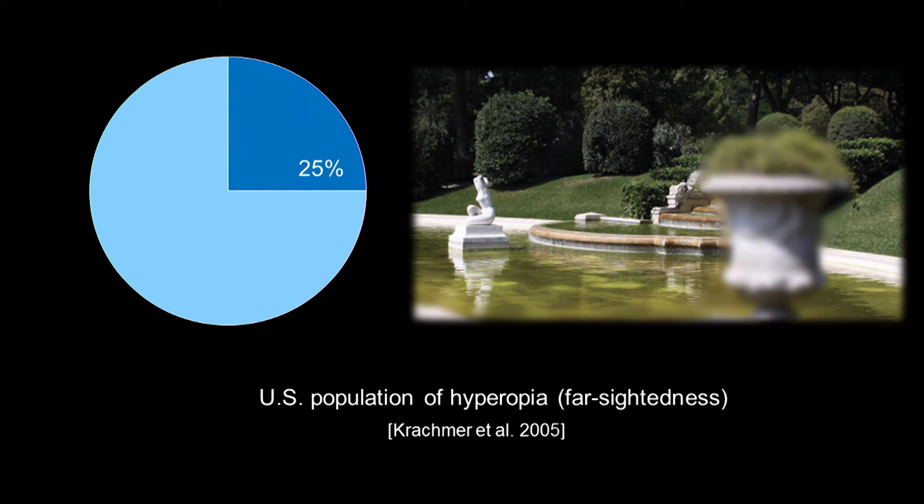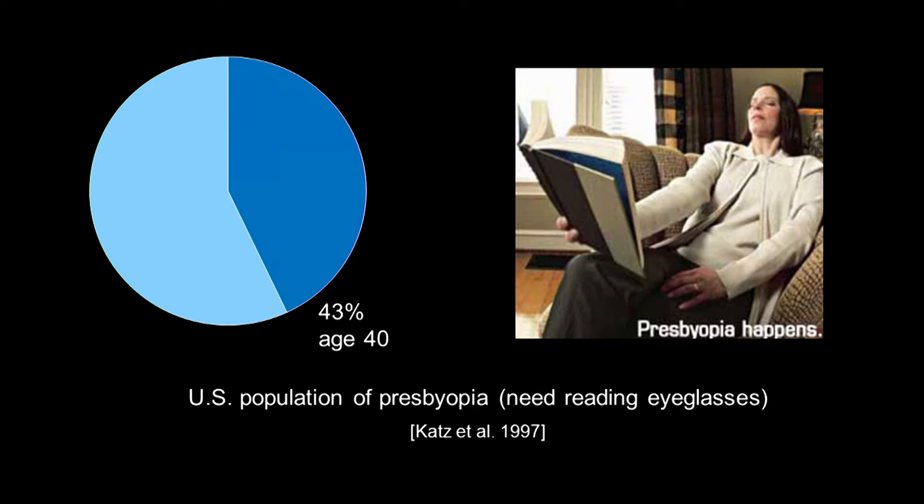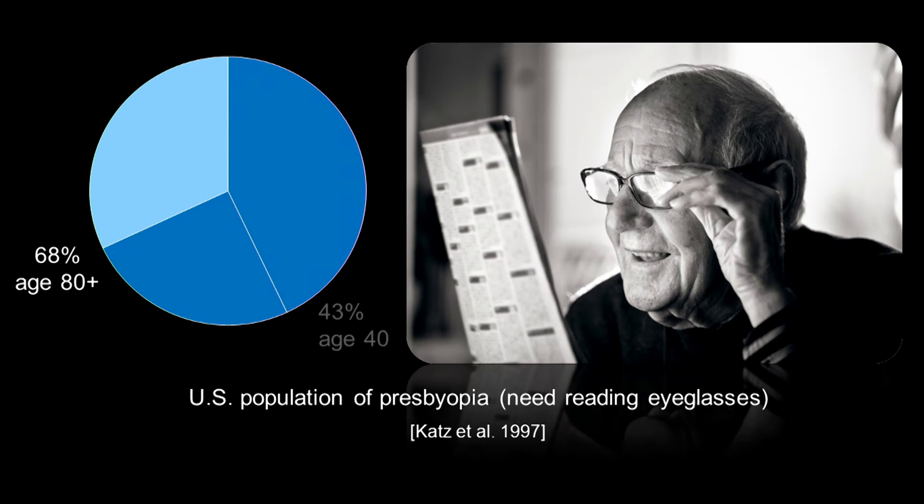We all know that visual aberration affects quality of life, and it is estimated about 25% of the people in the U.S. are farsighted. Since the ability to accommodate decreases over time, at the age of 40, the number of people having presbyopia is about 43%.